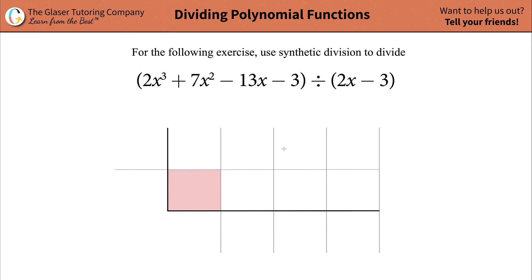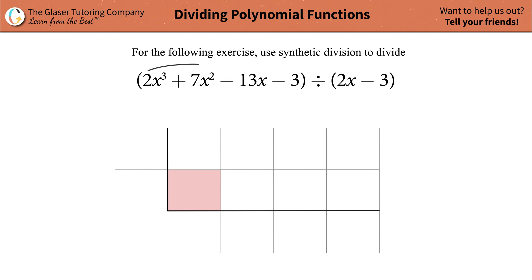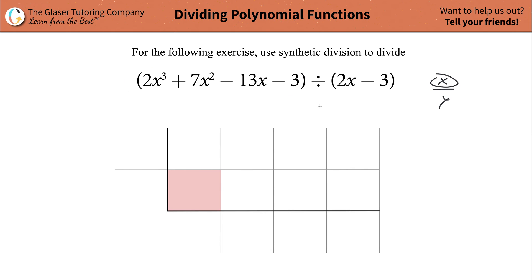The first thing is you want to create a synthetic division table, and you want to look at your dividend for the coefficients that you're going to place into the top row. The dividend is the thing that comes to the left of the division symbol, or it would be in the numerator of the fraction. You want to make sure that your polynomial function is decreasing in powers of x or whatever variable you have.